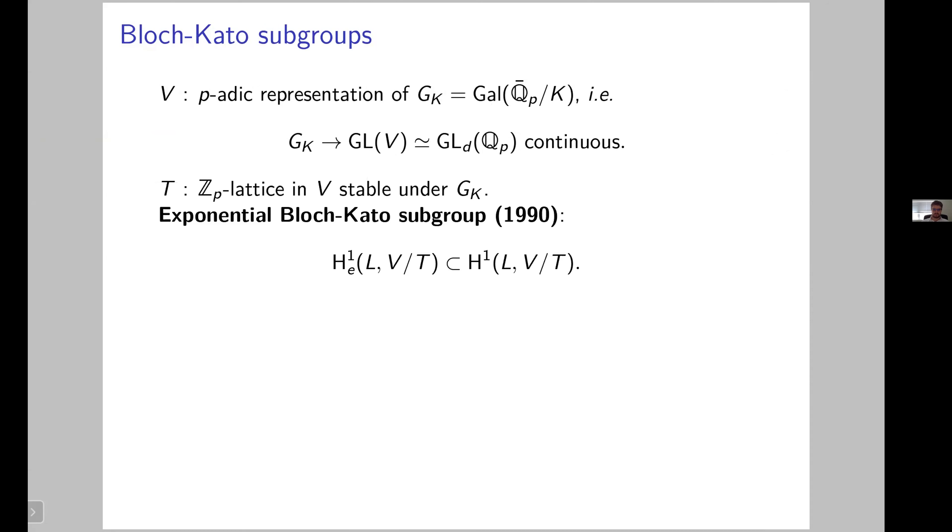Inside take a lattice T, a Z_p lattice which is stable under this action. So now the quotient V over T is a Galois module. Bloch and Kato have defined in 1990 several groups. I will just for simplicity consider one of them, the exponential Bloch-Kato subgroup, which is this H^1_e, and which is a subgroup of the first Galois cohomology group of G_L acting on V over T. This subgroup appears in their conjecture on special values of L-functions for motives.